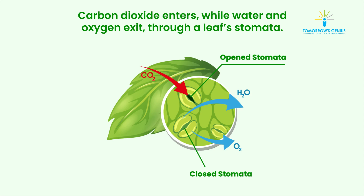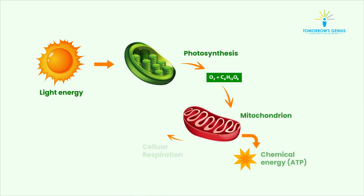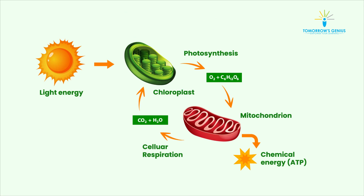Excretion of gaseous waste in plants takes place through stomatal pores on the leaves. Oxygen released during photosynthesis is used for respiration, while carbon dioxide released during respiration is reused for photosynthesis.